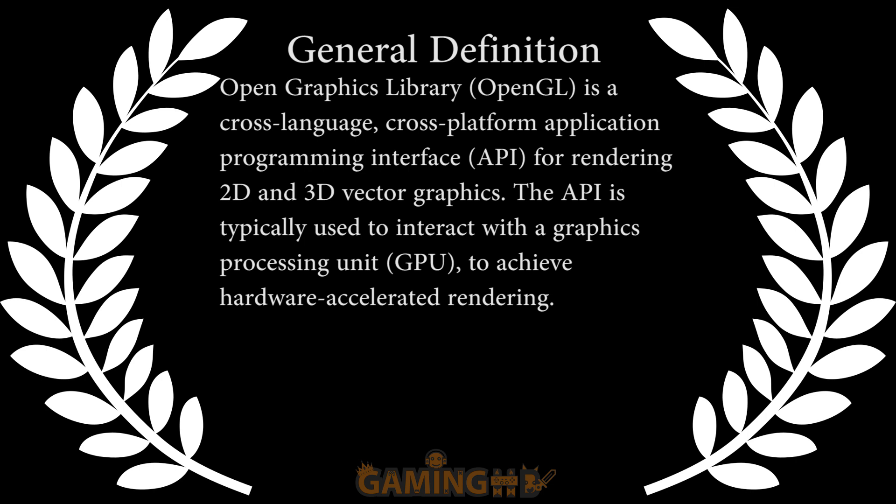OpenGL is used for rendering 2D and 3D vector graphics. The API is typically used to interact with a graphics processing unit, a GPU, to achieve hardware-accelerated rendering.